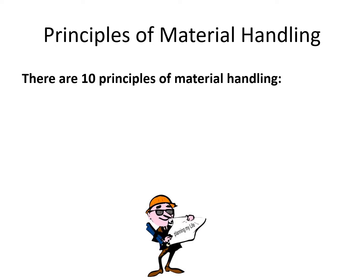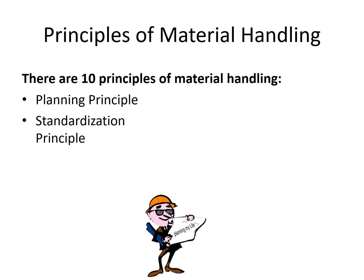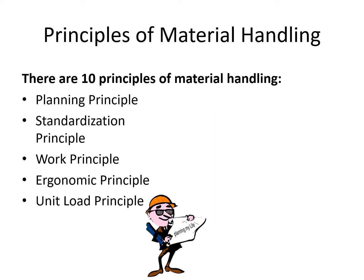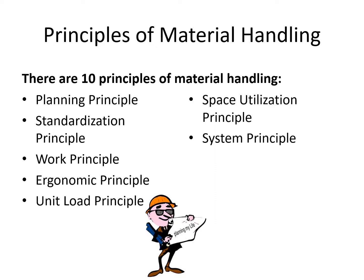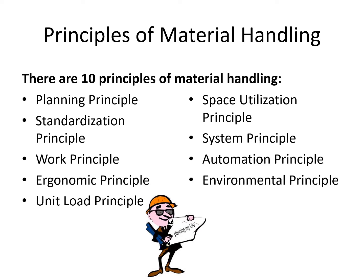There are certain principles of material handling which must be kept in mind while designing a material handling system. These include the planning principle, the standardization principle, the work principle, the ergonomic principle, unit load principle, space utilization principle, system principle, automation principle, environmental principle, and finally the life cycle cost principle. We shall be discussing each one of these separately.